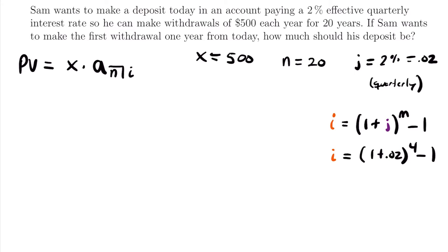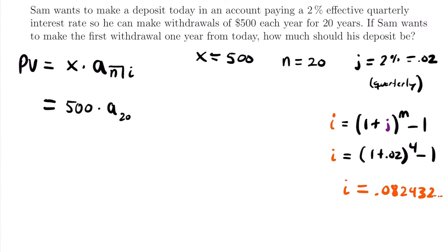If we plug 1.02 to the fourth power minus 1 into our calculator, I equals approximately 0.082432. That's our annual effective interest rate, which we can now use to find the present value of this annuity. So the present value equals 500 times A, with N equal to 20 and interest rate I.